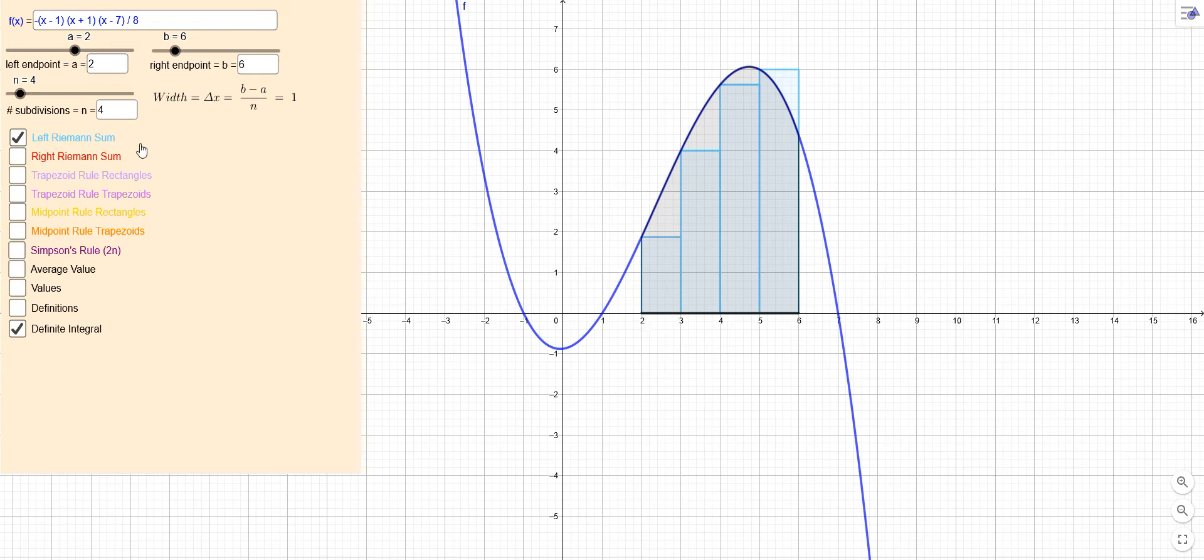So I take this interval from 2 to 6, which by the way are controlled by these sliders, which I can control here or just by typing a number in.